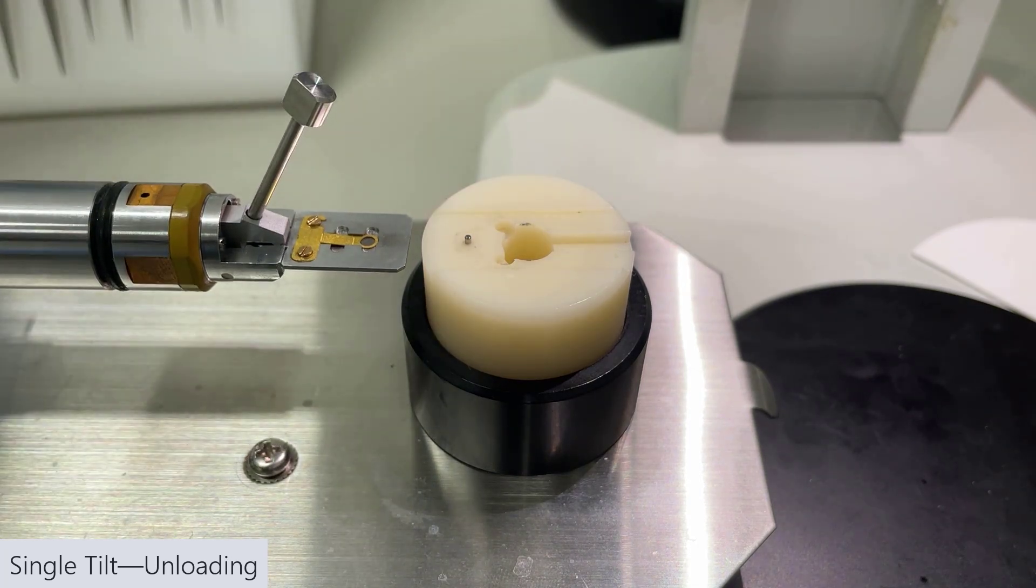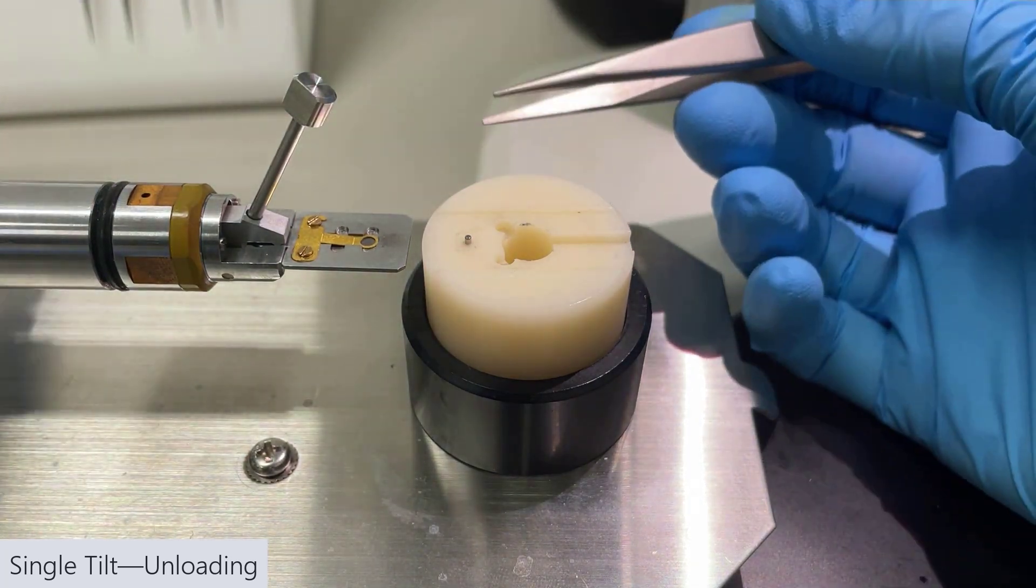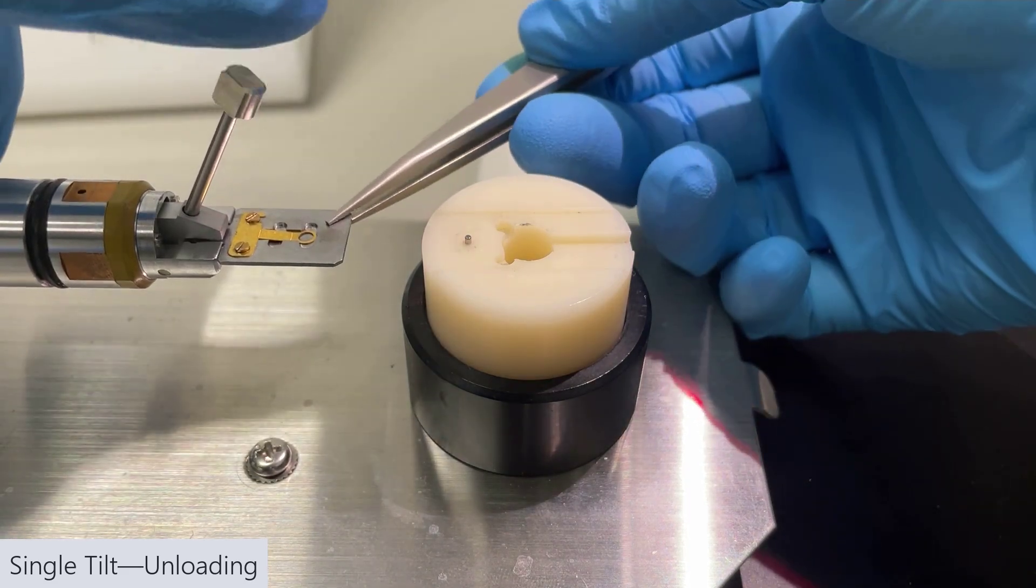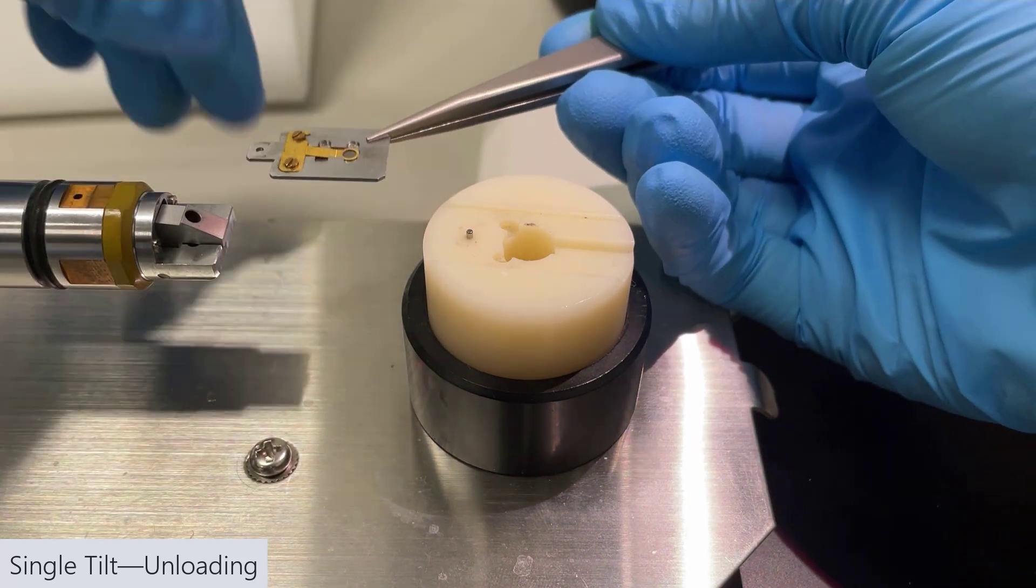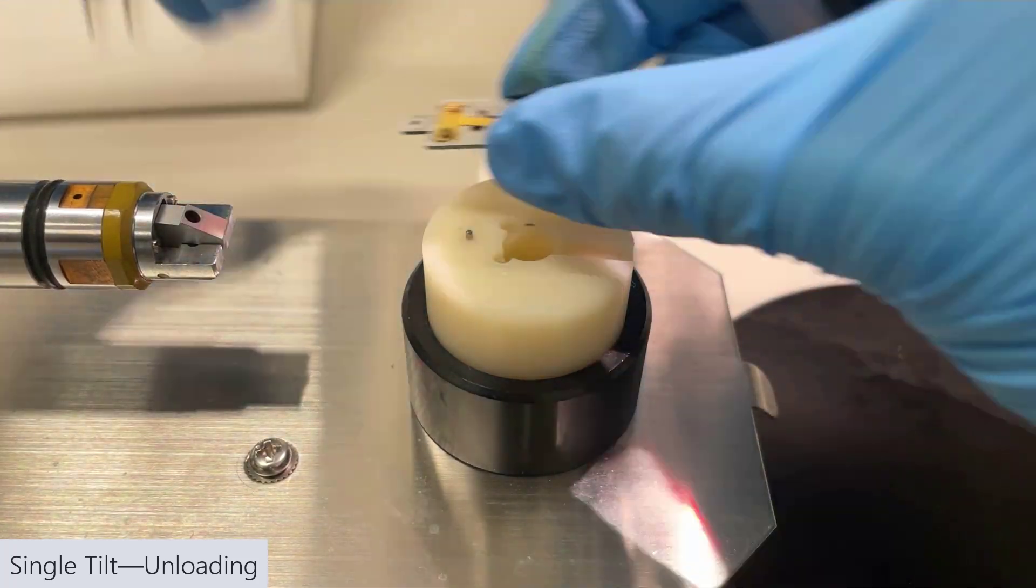it's the same process in reverse. We're going to go ahead and take the blade off of the holder. You can use your hands. I'm using thick tweezers here. Then we're just going to put the blade in its little holder.